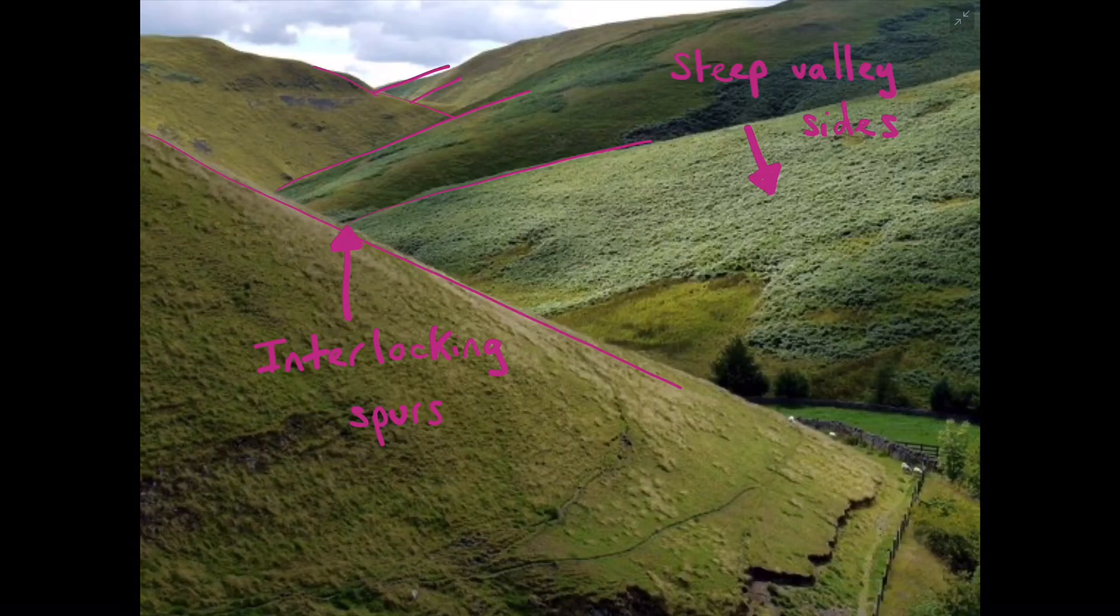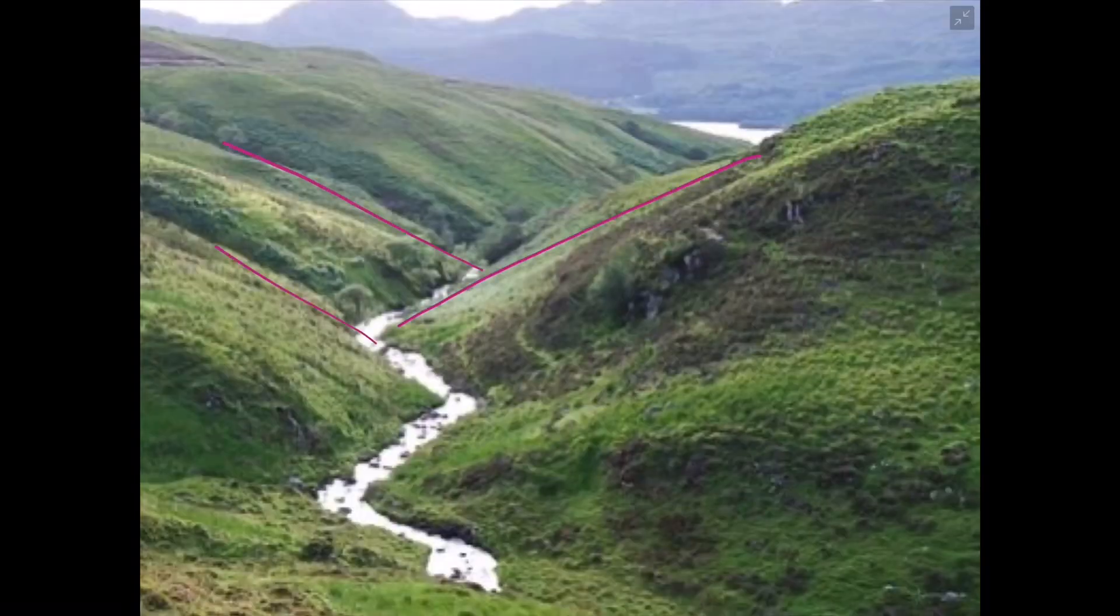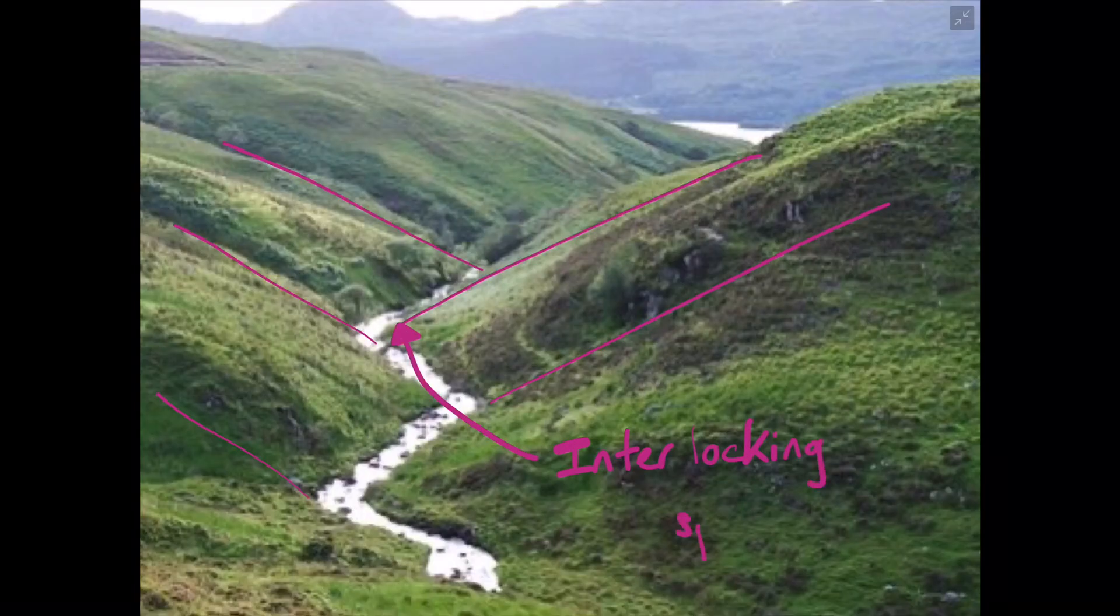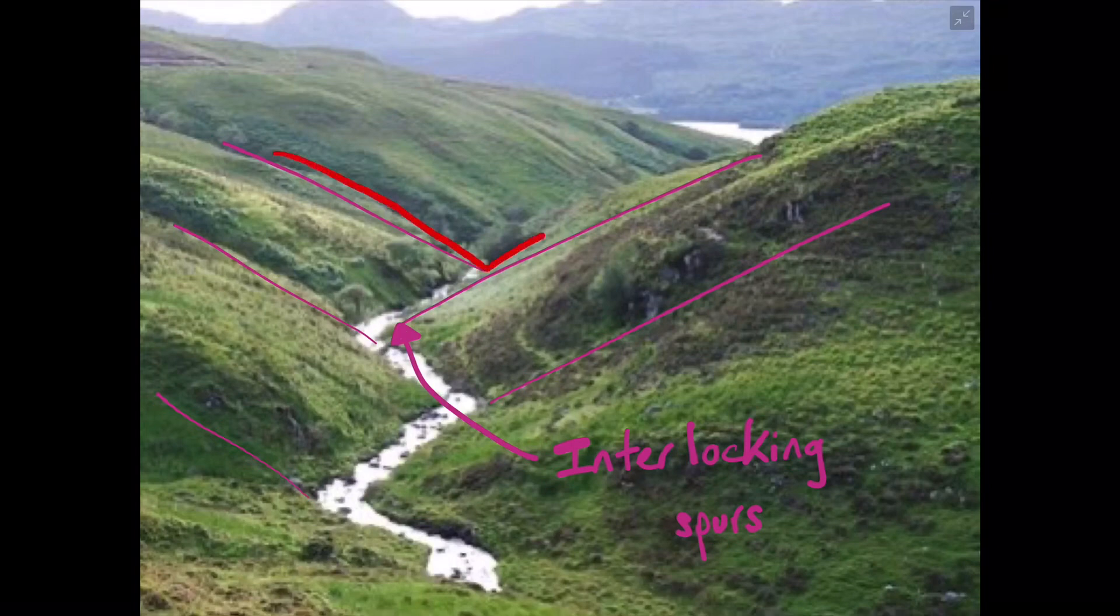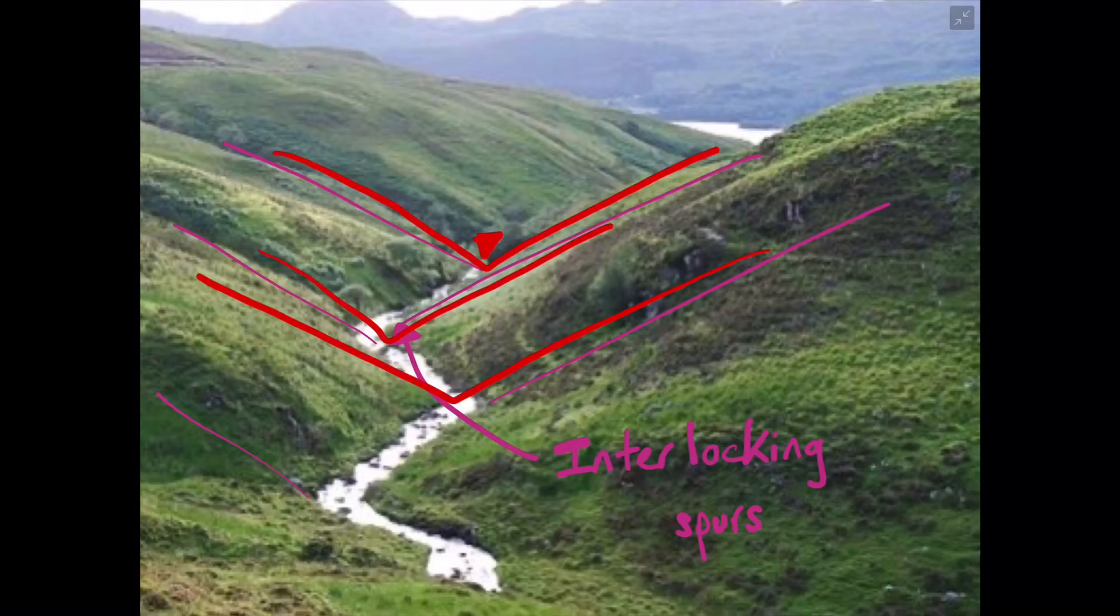A different alternative is an image where you can actually see the river running through the valley and these interlocking spurs again. What's special about this particular photograph is that you can actually see the river carving out the landscape and creating that V-shaped valley cross profile.